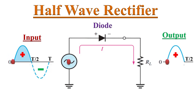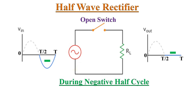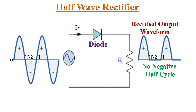During the negative half-cycle, the diode is reverse biased as the anode is negative with respect to the cathode. So the diode acts as an open switch and the negative half-cycle does not appear across the load resistor. Thus the half-wave rectifier allows only positive half-cycles and blocks negative half-cycles of the input AC voltage. Hence the continuous sine wave input will be converted into pulsating positive pulse trains at the output.